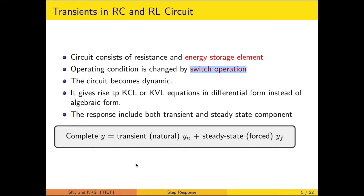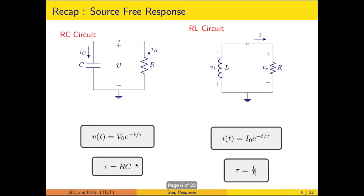The transient response is temporary in nature — it decays with time and ultimately vanishes for a stable system. In the free response characteristic discussed for RC and RL circuits, immediately after the switching operation there is no external source. The transients are driven by the initial charge on the capacitor or initial current in the inductor, governed by V = V₀·e^(−t/τ) and I = I₀·e^(−t/τ).